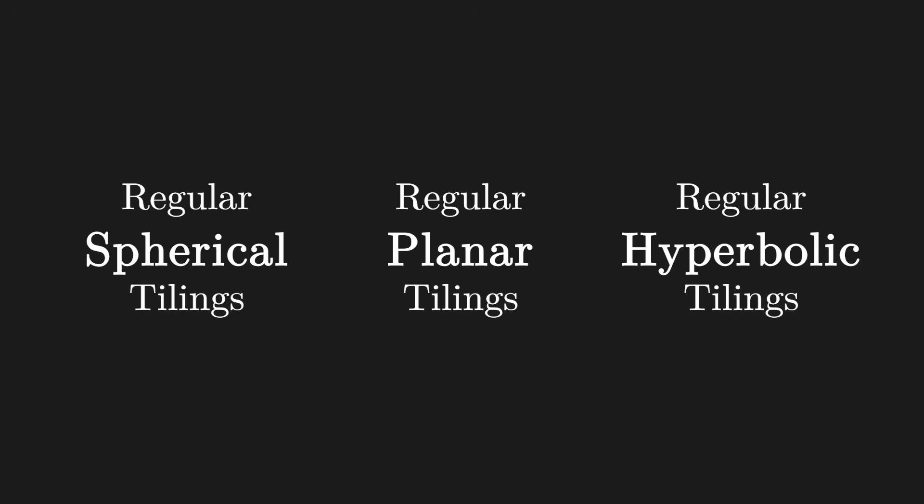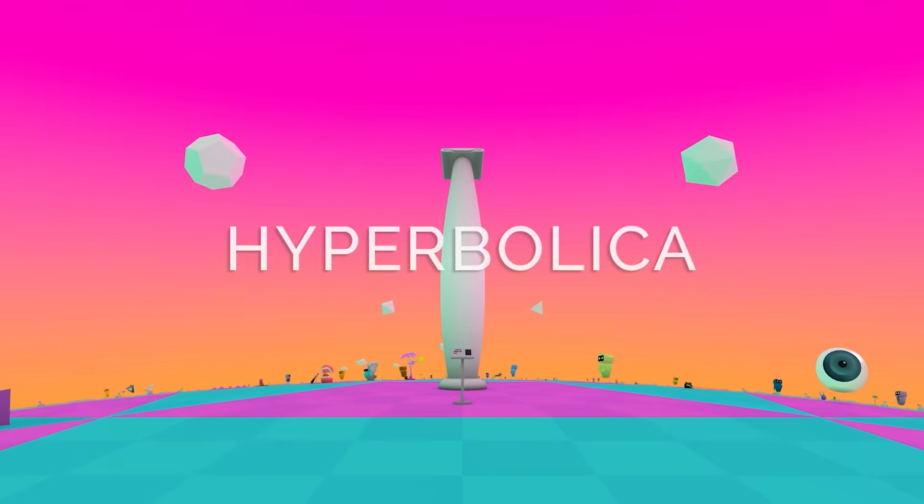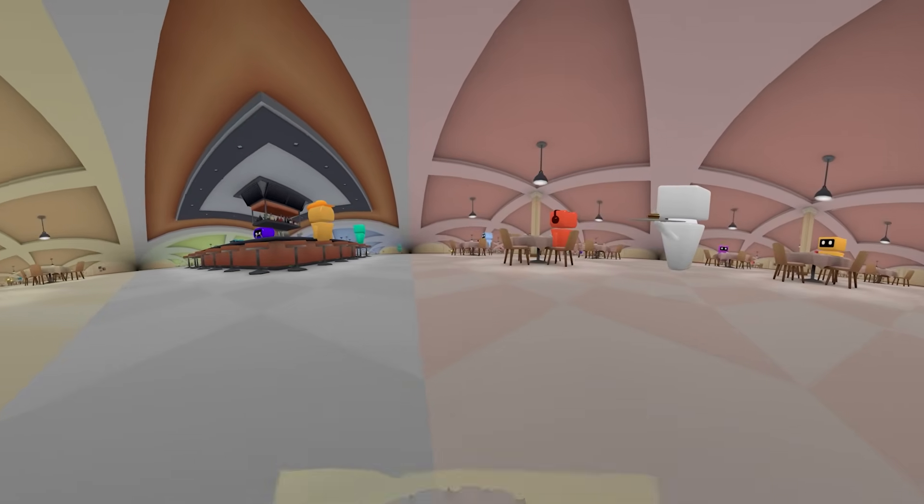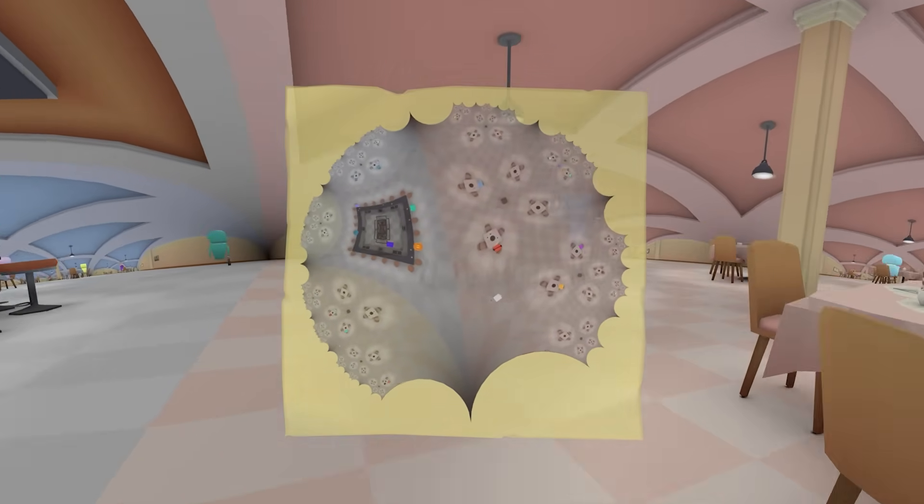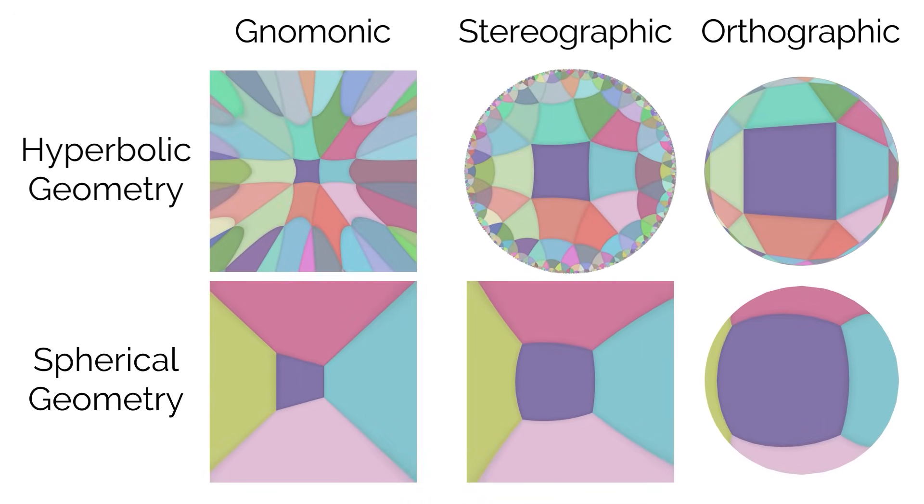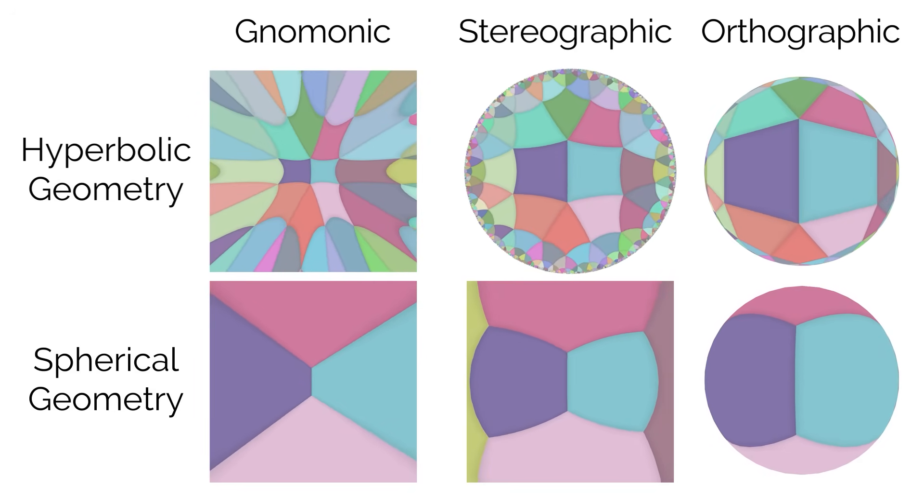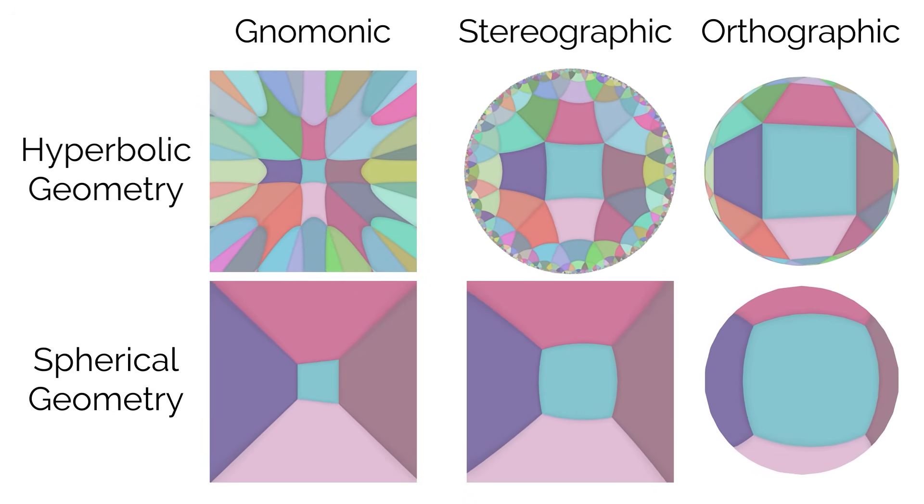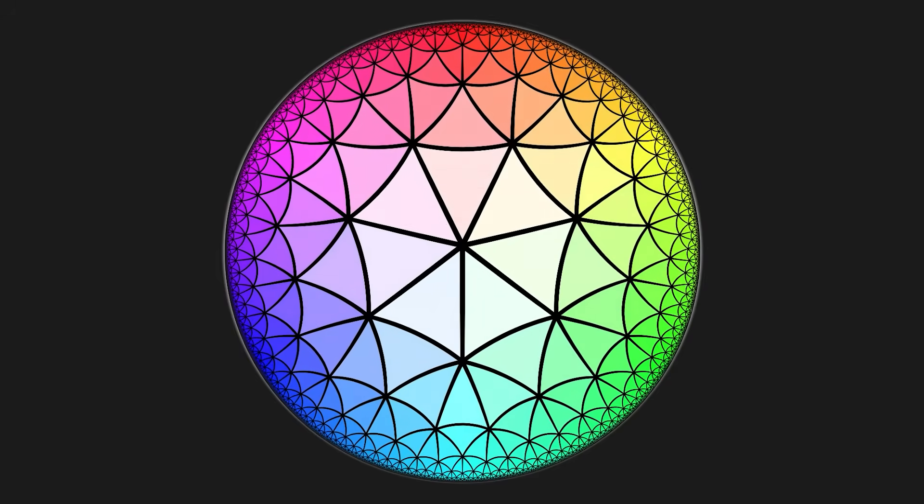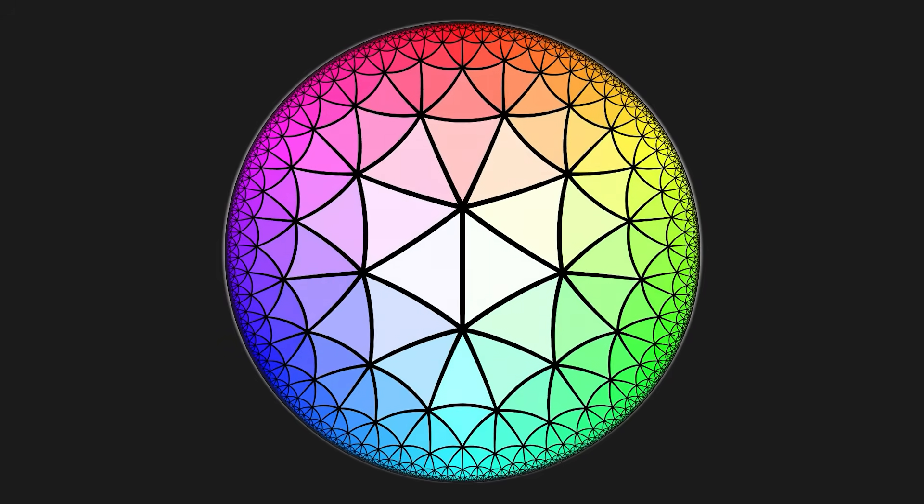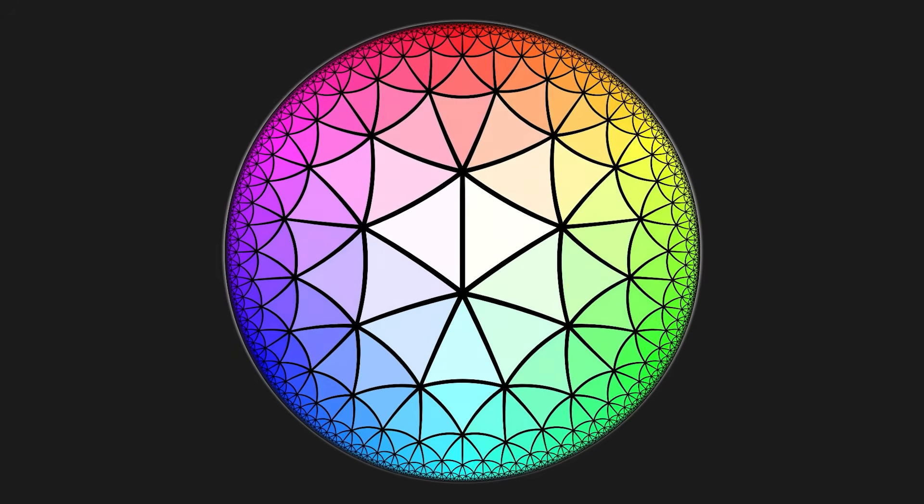Hyperbolic tilings. If you've played my game Hyperbolica or watched the devlogs, you'll know what I'm talking about. But to quickly summarize, we could cram more faces around each vertex than a Euclidean flat tiling. For example, seven triangles around a vertex instead of six.